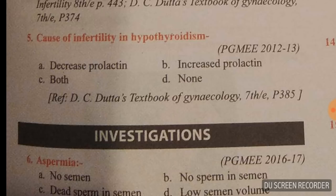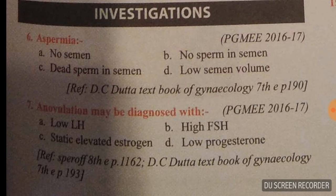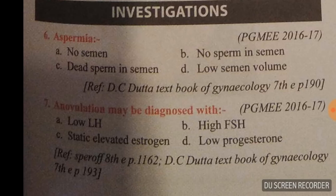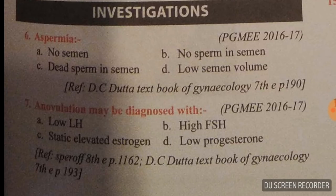In hypothyroidism there is an increase in prolactin level. Question number six: aspermia — you might think it refers to absent sperm, but it actually means no semen. Remember: aspermia means no semen, not no sperm. The answer to question six is option E.